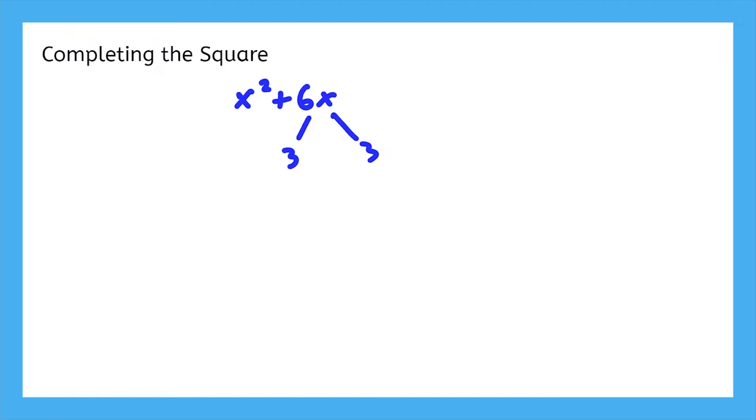We know from factoring that those same two numbers that add to make the middle term have to multiply to make the constant. So what is the constant?